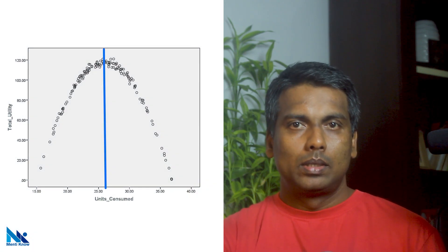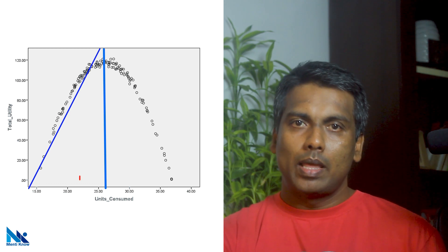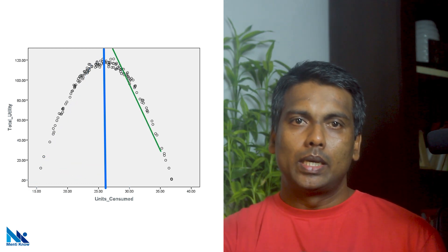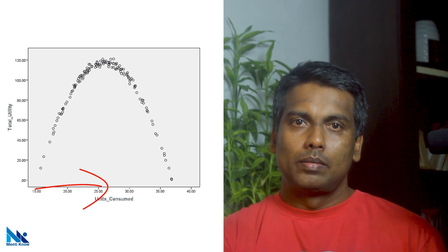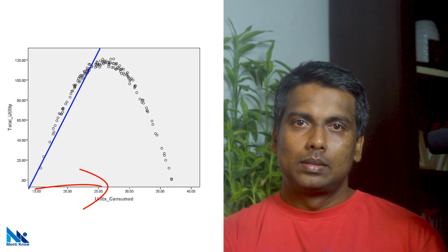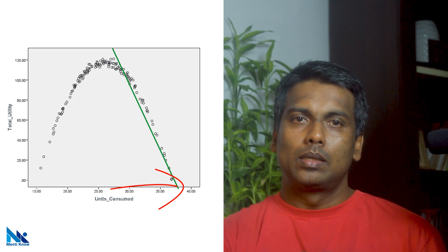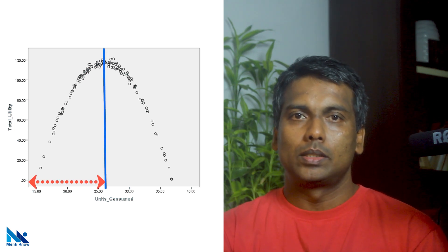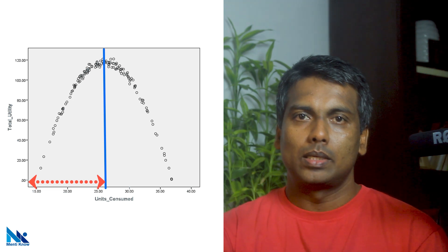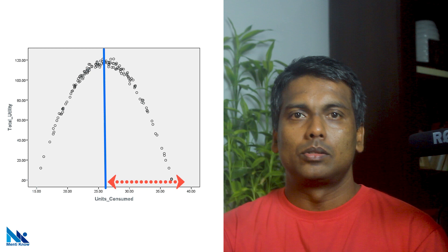Nevertheless, there are some tweaks we can use when the relationship is nonlinear. One simple approach is to split the data file so that in each segment we can observe an approximate linear relationship. For example, in this scatterplot these two variables show a positive linear relationship in the left half, whereas there is a negative linear relationship in the right half. In other words, when the number of units consumed increases up to around 27, total utility seems to increase approximately linearly. Thereafter, we can see an approximate linear decrease in total utility. So, I want to split the file into two groups: observations where units consumed is less than or equal to 27, and observations where units consumed is greater than 27.